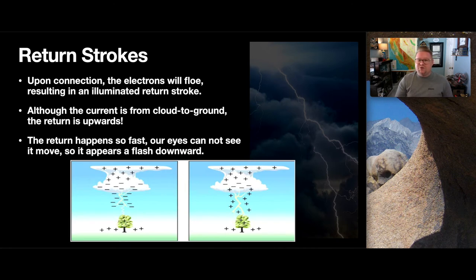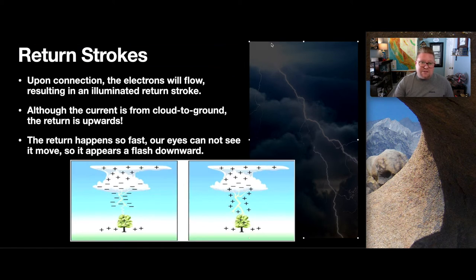And then, moving into the last phase is the return stroke, and this is essentially the lightning itself. Upon connection, the electrons will flow, resulting in an illuminated return stroke, which is very interesting, I think, to me. Because my whole life, I had just assumed that when you see the lightning flash down, that that's what we're seeing is the energy transferring. But, actually, that's not the case. What we're observing in that lightning stroke is actually a return stroke. So, that's actually going from the bottom up. It's the return. The light energy is the return of the actual energy being transferred downward. So, although the current is from cloud-to-ground, the return stroke, or the rebound, is going to be traveling upwards. But, it happens so fast that our eyes cannot see that motion, and it just appears as a flash.